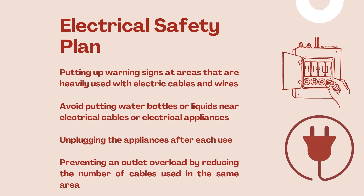Moving on to the second main plan, which is the electrical safety plan. In Dan Studio Company, we have a lot of electrical appliances such as speakers, microphones, DJ sets, cables, and so on. Incidents such as burns, electrocution, and electric shock might occur in the future if precautionary measures are not taken. The safety plan is as follows: first, putting up warning signs at areas heavily used with electric cables and wires; next, avoid placing water bottles or liquid near electric cables during a dance class; next, unplugging appliances after each use to prevent any electrical waste; and last, preventing outlet overload by reducing the number of cables used in the same area.